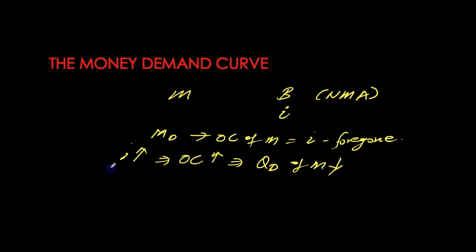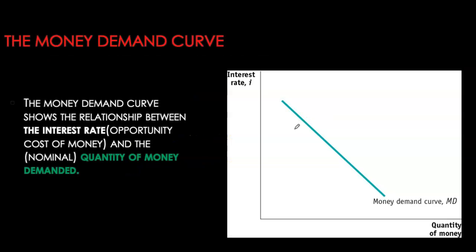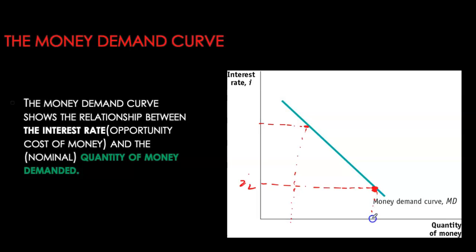The higher the interest rate, the higher the opportunity cost of holding money balances, and therefore the quantity demanded of money will decrease. This gives us our downward-sloping money demand curve — an inverse relationship between interest rates and quantity of money demanded. At higher interest rates, quantity demanded is quite low; at lower interest rates, people are willing to hold more money balances.